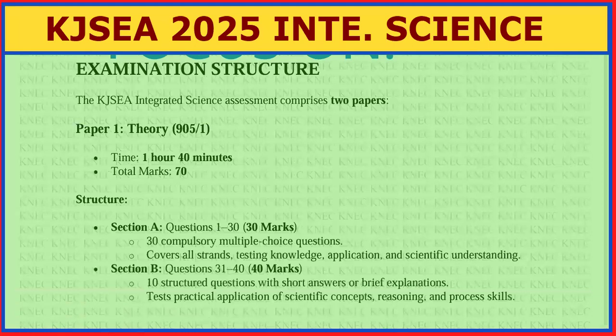You are waiting for a paper called Paper One and Paper Two. We have the theory paper — 905/1 — the time given is one hour 40 minutes and total marks are 70. Section A has questions one to number 30, that is 30 marks, and these questions are compulsory for everyone.